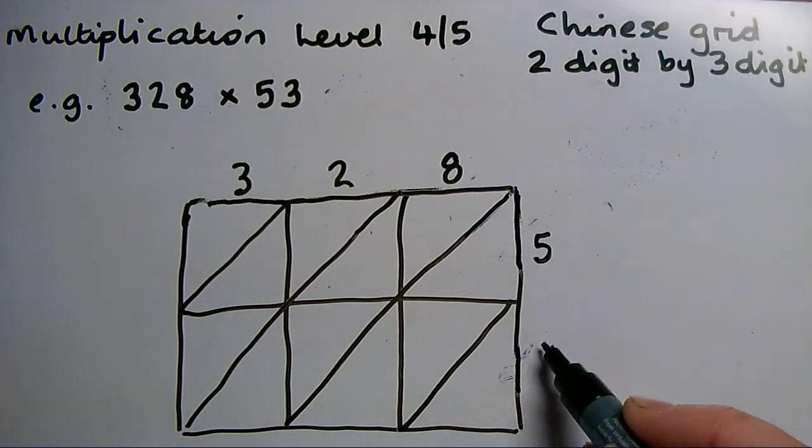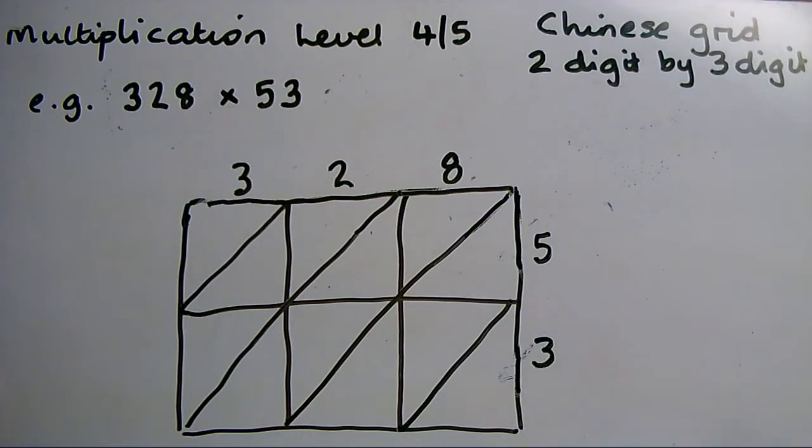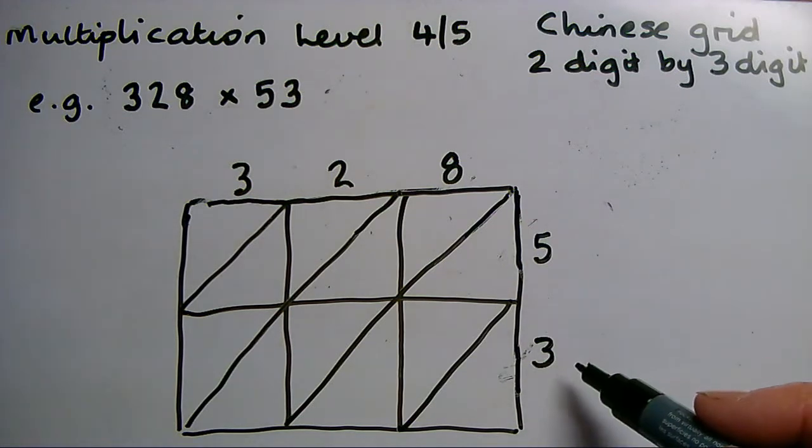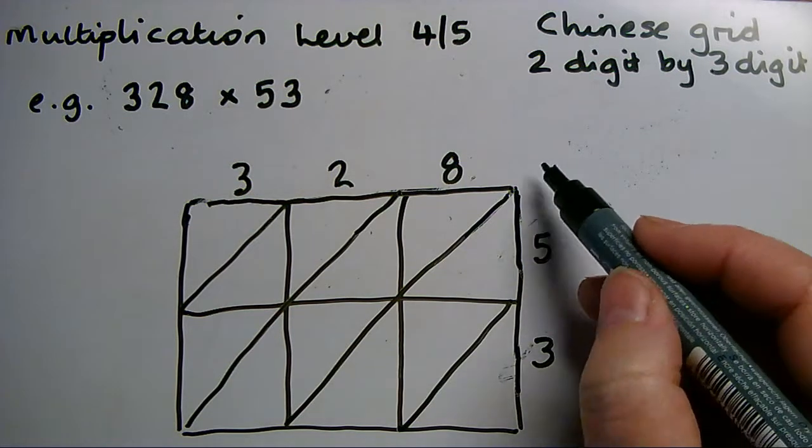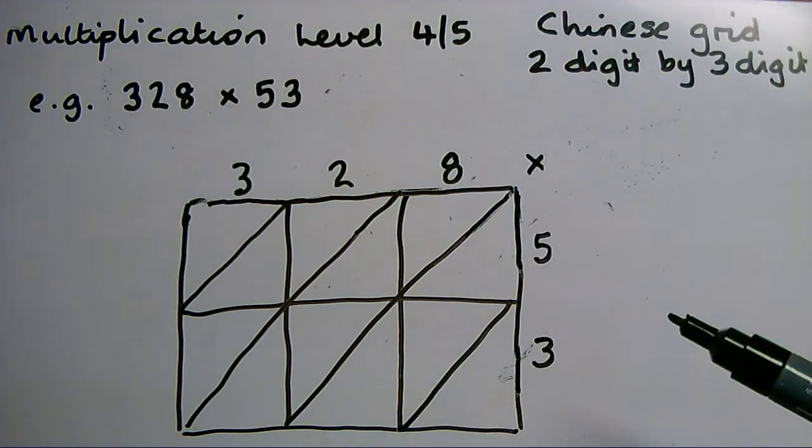Again, down the side I'm not going to write 50 and 3, I'm going to write 5 there and 3 there. In normal grid method I would put this down the left hand side. In Chinese grid these digits go down the right hand side.